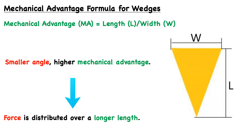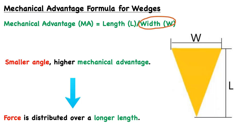By the smaller angle, they're talking about the acute angle towards the penetrating edge. Because if we were to increase the length — and by doing so increase the mechanical advantage — or increase the mechanical advantage by decreasing the width, then this angle actually gets smaller. You can think about it in either term, but we recommend keeping the mechanical advantage formula on hand and in mind.